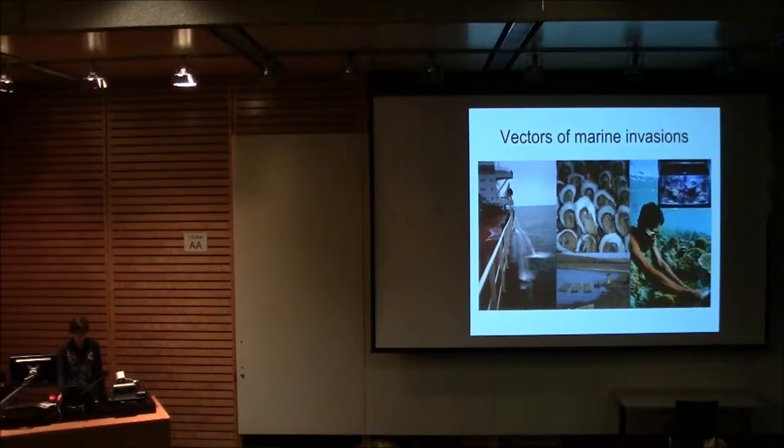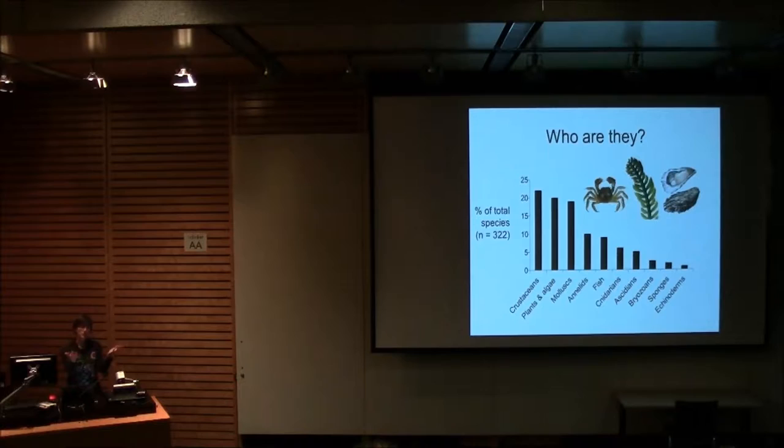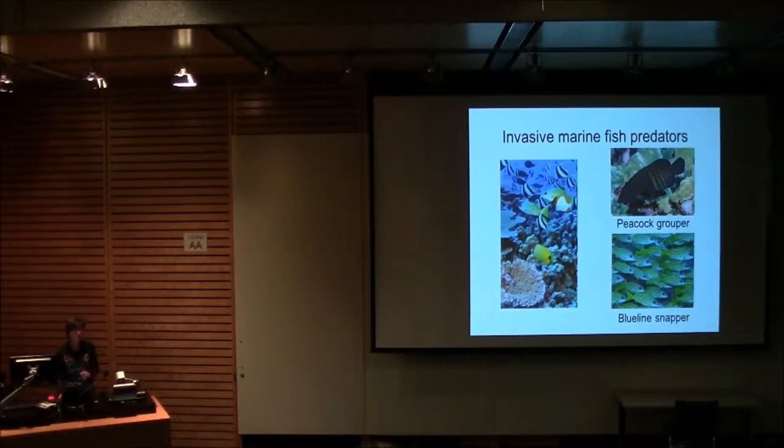Just to get a picture, to situate lionfish, which obviously is a fish in the grand scheme of who marine invaders are, here you've got the proportion of all species in a large database of marine invaders. You can see that crustaceans, algae, and mollusks tend to make up the bulk of marine invaders. Fish are relatively rare, not very many fish invaders.